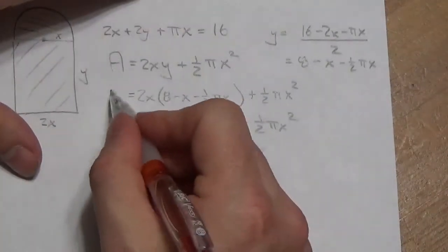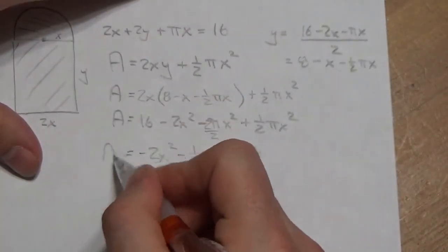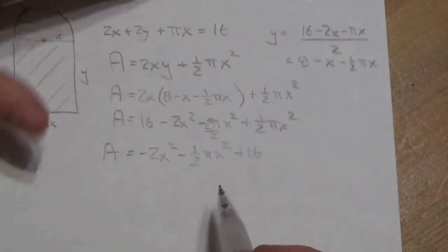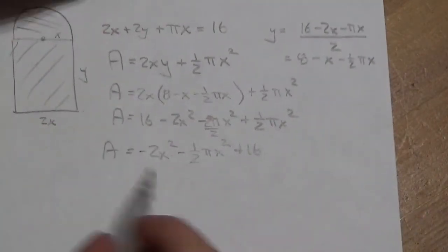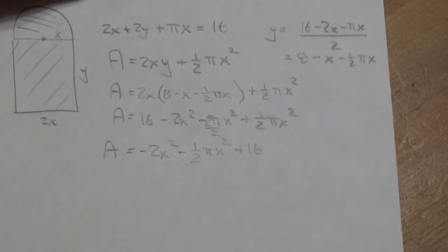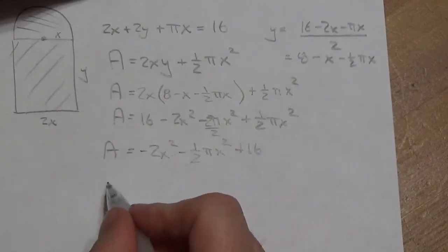So, this is my area. And now, I've got area down as an expression only in terms of the variable x, which we're using as the radius. So, now, I'm going to take the derivative.